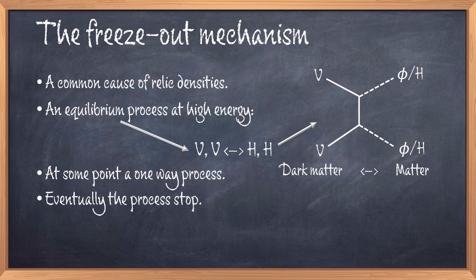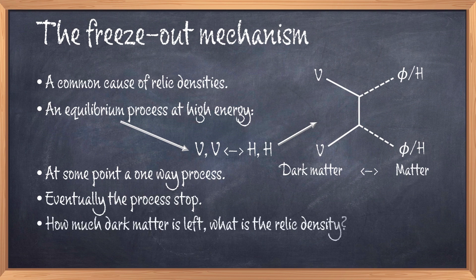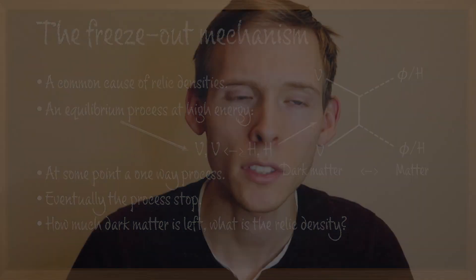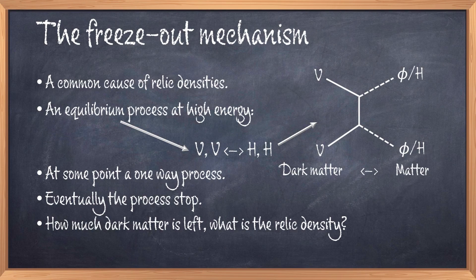Now depending on how efficient the annihilation before the freeze-out takes place, we get some relic density of dark matter. So we can calculate a lot of Feynman diagrams and try to figure out how much dark matter will be destroyed and how much will be left after freeze-out. And thus we can determine the dark matter relic density of the model. Computing a lot of math allows us to calculate the relic density of this model. And yes, spoiler alert, we can produce enough dark matter with this model.